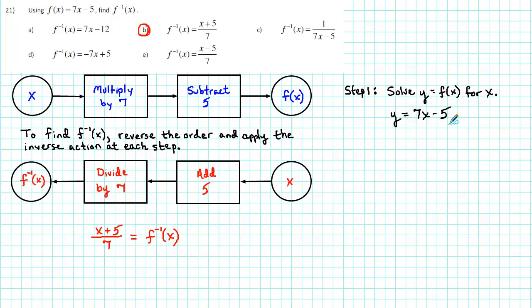To solve this equation for x, we first of all need to add 5 to both sides. We get y plus 5 is equal to 7x.